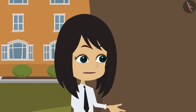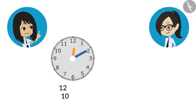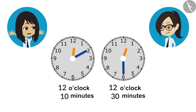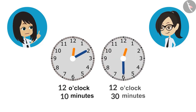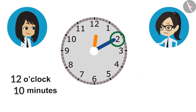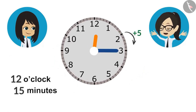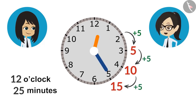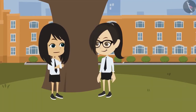Let us draw them first. So this is the start time of our break, and this is the end time of our lunch break. Now look, the minute hand is at 2. From here to 3, we will count 5 minutes. Till 4, it will be 10. Just like that, 15, 20. This means our lunch break gets over in 20 minutes.